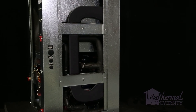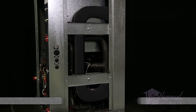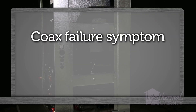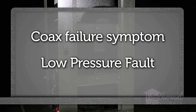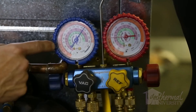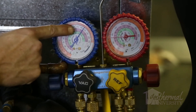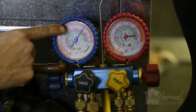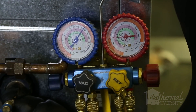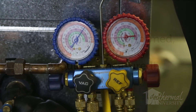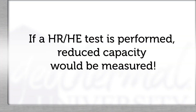In a unit with a leaky coax, a symptom would likely be a low pressure fault. If the pressure in the refrigerant system remains high enough, the unit may run and appear to be operating nearly normal. However, reduced capacity would be measured if you were to calculate the heat of extraction or rejection.